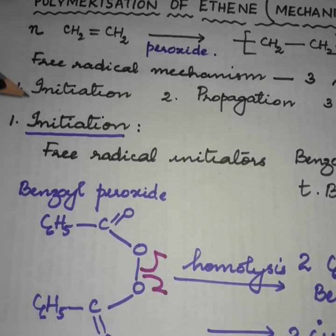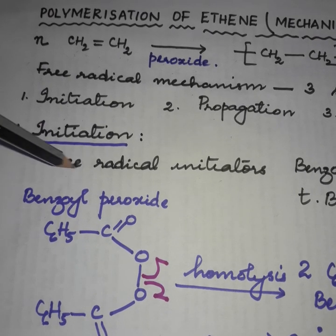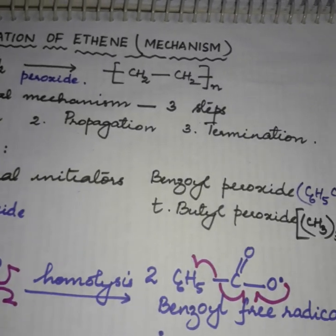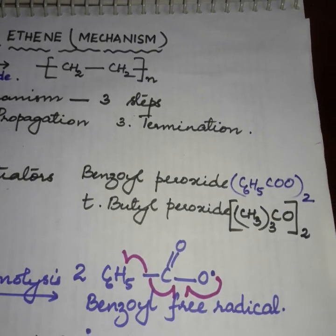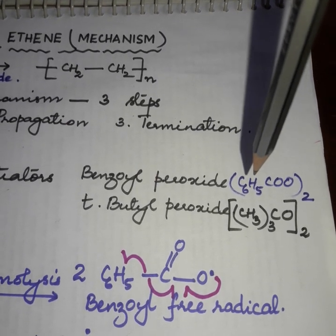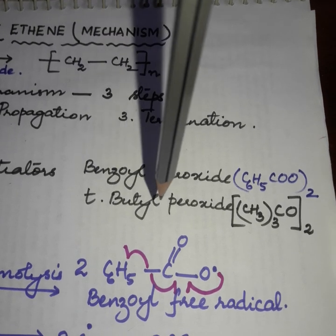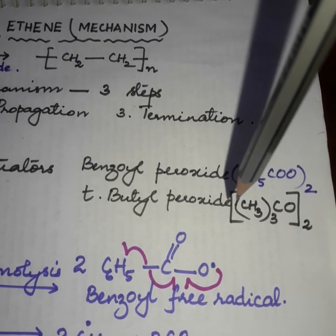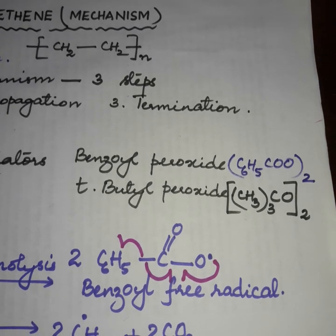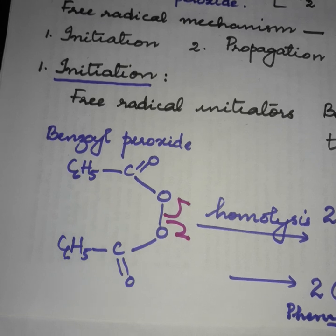For initiation to take place, we require compounds known as free radical initiators. The commonly used free radical initiators are benzoyl peroxide with the formula (C6H5COO)2, or tertiary butyl peroxide with the formula (CH3COO)2. Today we'll be discussing benzoyl peroxide.